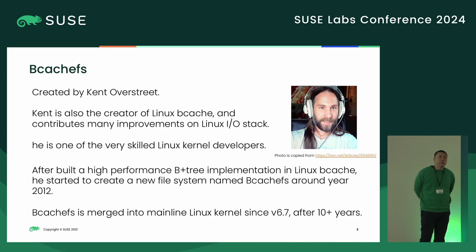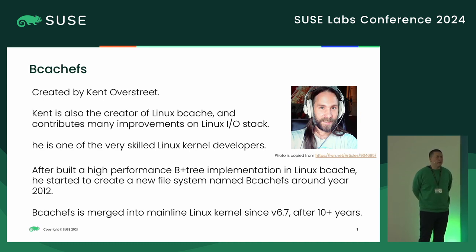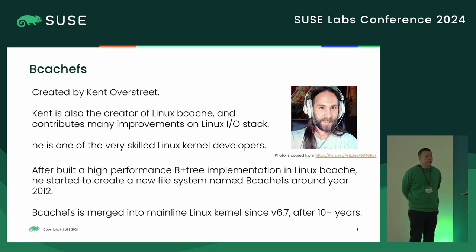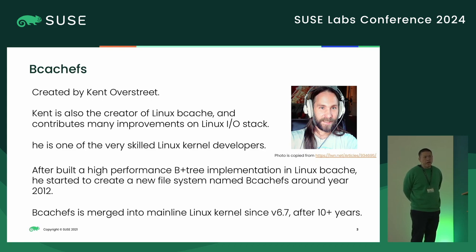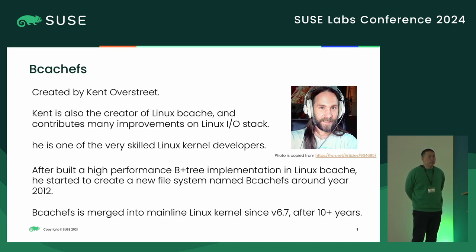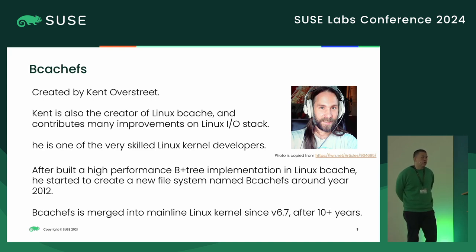After Linux Bcache merged into the kernel — around version 3.10 — Kent felt the infrastructure of the code, the B-tree, the high-performance B-tree, was quite good to implement a file system on top of it. And then Kent started to work on a new file system named BcacheFS.